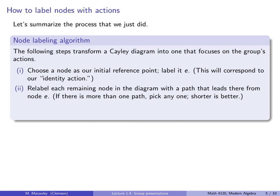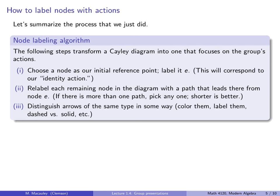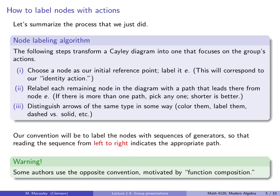Finally, distinguish arrows of the same type in the same way. So either color them, label them, dash versus solid, or so forth. This is nothing different than what we've done before. They correspond to different generators. So our convention will be to label the nodes with sequences of generators so that reading the sequence from left to right indicates the appropriate path. And I will give a quick warning that some authors use the opposite convention. They read them from right to left, because that's how you would read them if it were like function composition. But for this class, I am always going to read things from left to right.